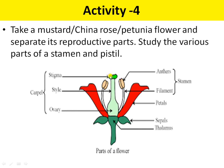You will observe that on the upper part, the stigma is present — that is the female reproductive part. The carpel is the complete female reproductive part; it carries the stigma, style, and ovary. The first swollen part is the stigma, then the style, which is the longest part, and at the base is the ovary. This is the female reproductive part.